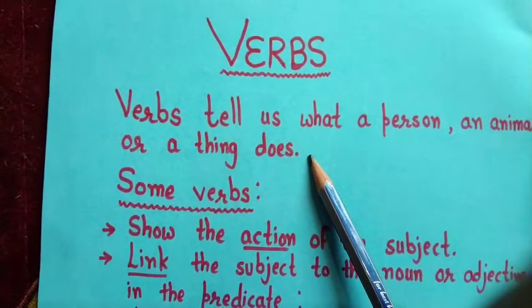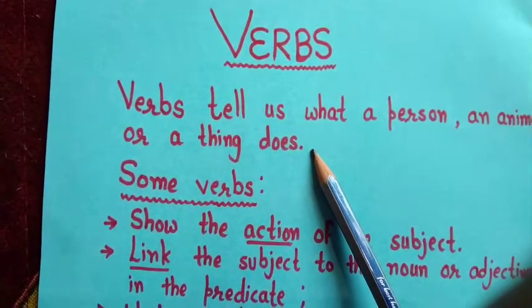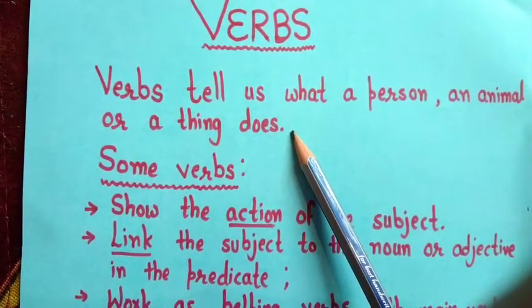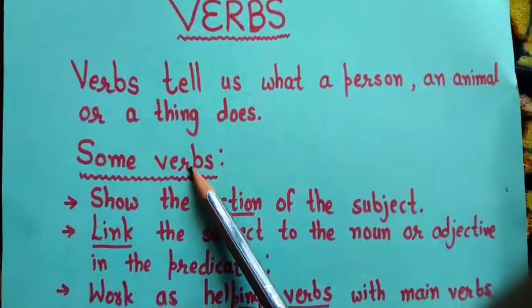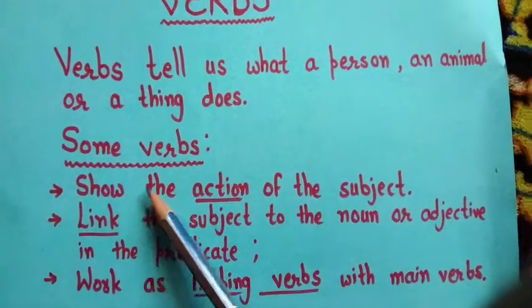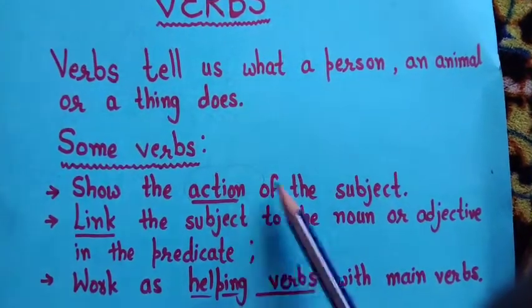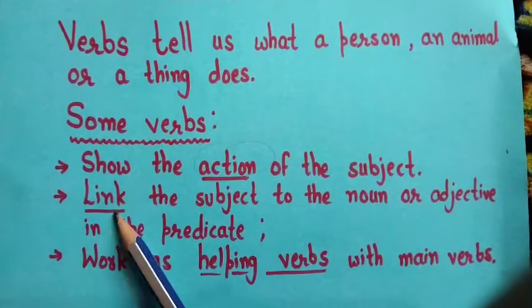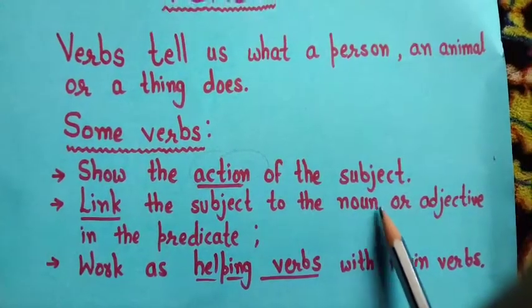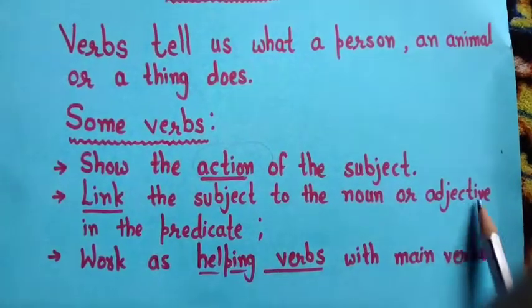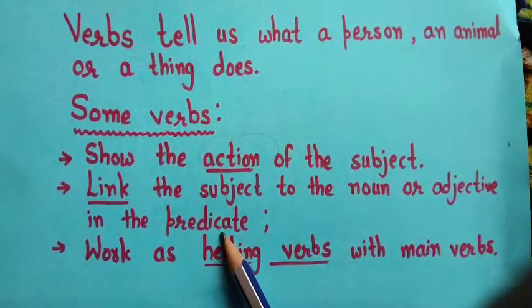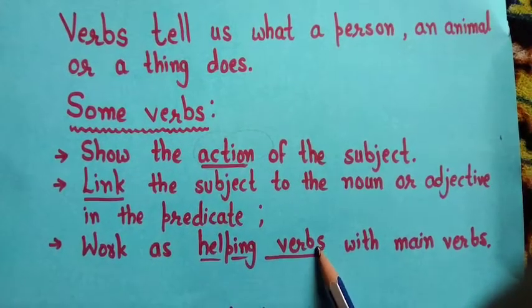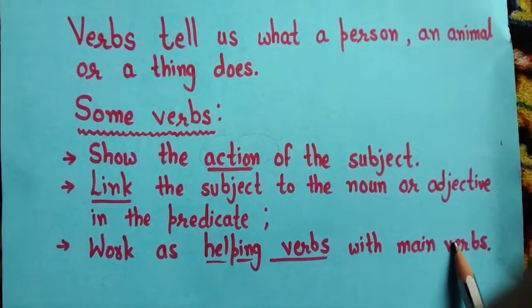Verbs can be understood in many ways. Verbs perform different actions. Some verbs show the action of the subject, link the subject to the noun or adjective in the predicate, or work as helping verbs with main verbs.